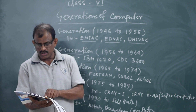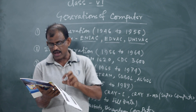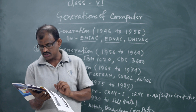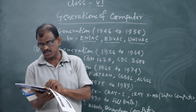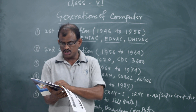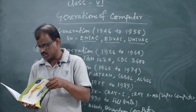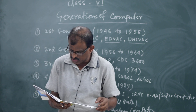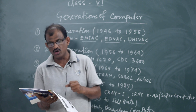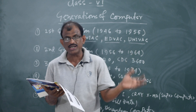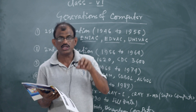A VLSI chip contains millions of transistors and other circuit elements. Nowadays, microprocessors are built using the Very Large Scale Integration technique. These chips made fourth generation computers more compact, powerful, fast and affordable.